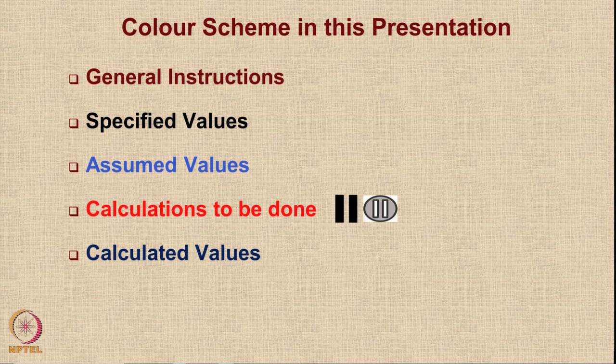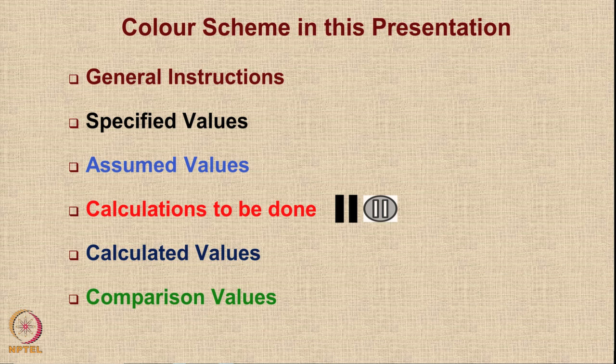The calculated values you obtain using the formulae will be shown in dark blue color, and you should match your values with these. At the end, I have some comparison between our estimated and calculated values versus the values prescribed for Boeing 787, shown in green color. I hope you appreciate this color scheme — it will help you in understanding the scheme of things.